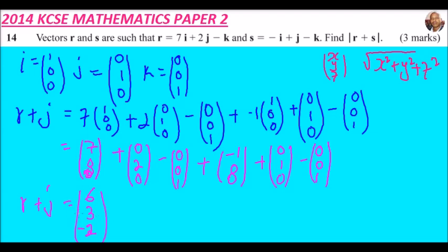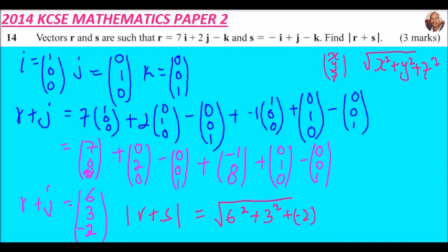So the magnitude of r + s equals the square root of 6 squared plus 3 squared plus (-2) squared. Computing that gives the square root of 49, which equals 7. So the magnitude is 7.